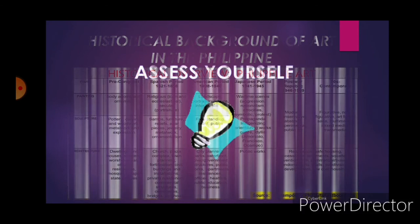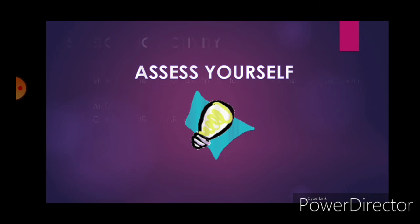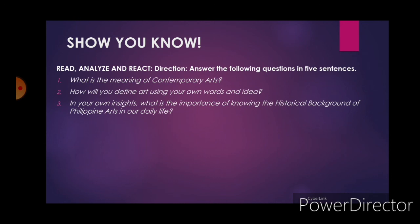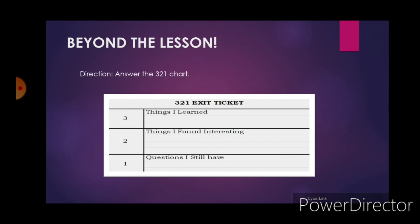Now we will assess ourselves. For our stretching activity, give one sentence to define the following words based on your own idea: art or arts, then contemporary art. Next, read, analyze, and react. Answer the following questions in five sentences: Number one — what is the meaning of contemporary arts? Number two — how will you define art using your own words and ideas? Number three — in your own insight, what is the importance of knowing the historical background of Philippine arts in our daily life? And for our Beyond the Lesson, answer the 2-3-1 chart: three things you've learned, two things you found interesting, and one question you still have. These activities are available in your BLMS — access the quiz part and answer the short question and answer there.